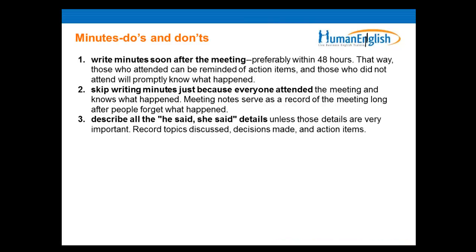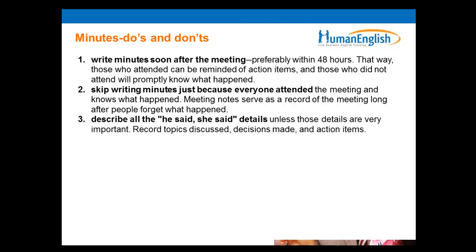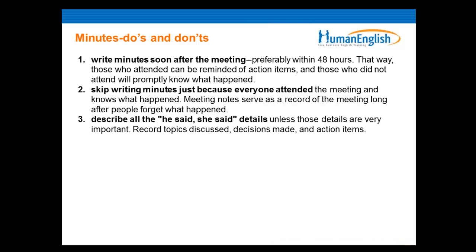Number three: describe all the 'he said, she said' details unless those details are very important — record topics discussed, decisions made, and action items. We have different answers: Gunther said 'do' and Peri said 'don't.' Well, if we look carefully, it says describe all the 'he said, she said' details — this is actually a don't. We don't need to describe every single detail of exactly what every single person said. Only the important details — only the details that are critical about the issues and ideas in the meetings, not every single thing.